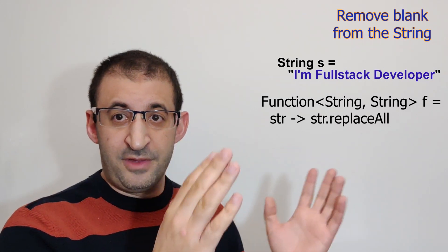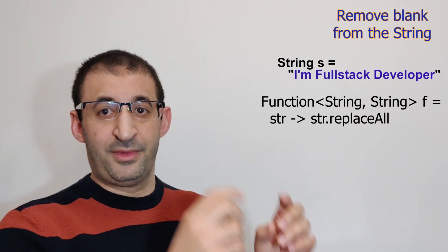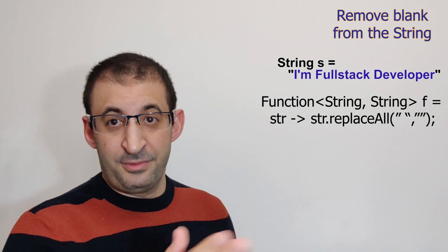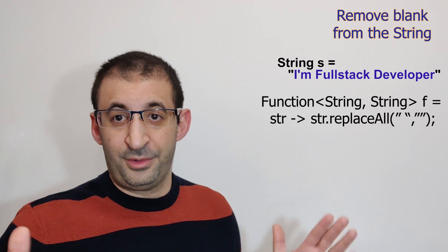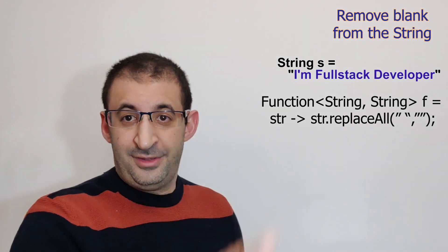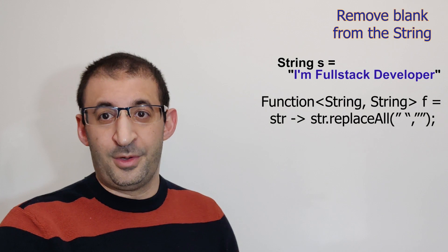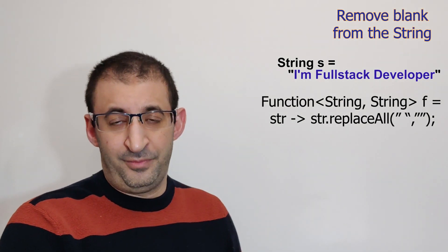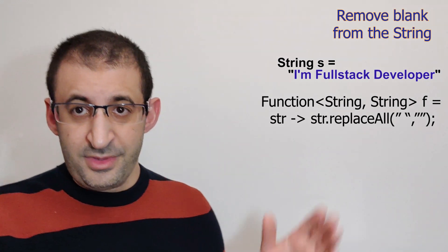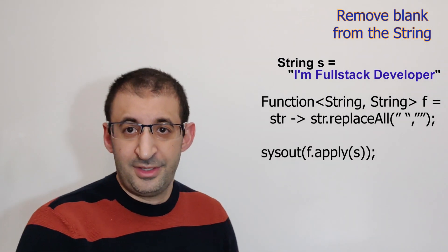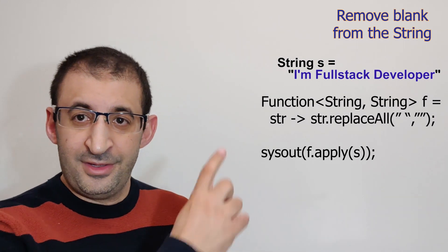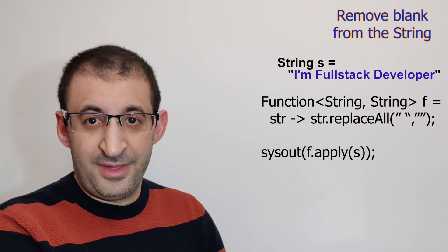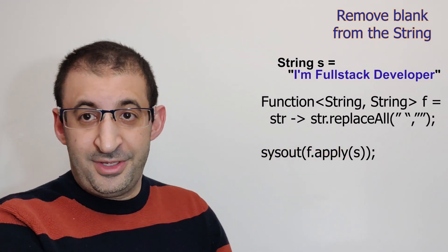So, I will give it the blank characters, and I want to replace them with empty characters — without anything. I have finished with my lambda expression, and now I want to apply this: system.out.println, f.apply my string, and as you can see, I will get this result.